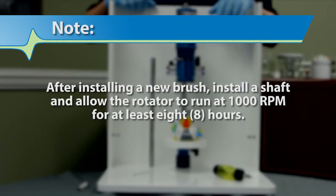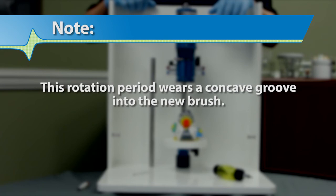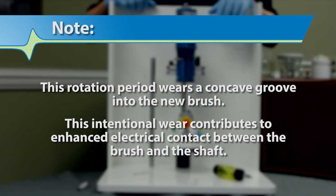After installing a new brush, install a shaft and allow the rotator to run at 1000 RPM for at least 8 hours. This period wears a concave groove into the brush and contributes to enhanced electrical contact between brush and shaft.